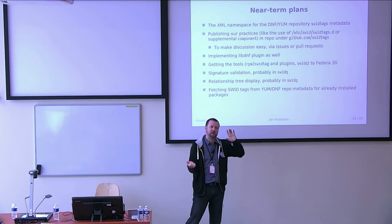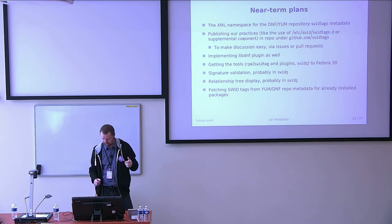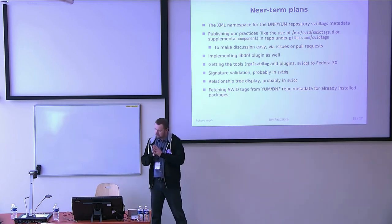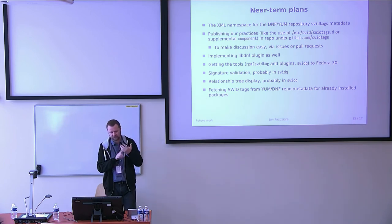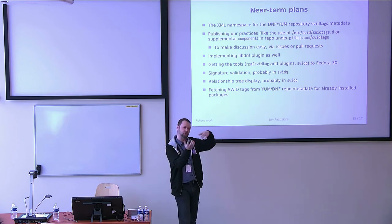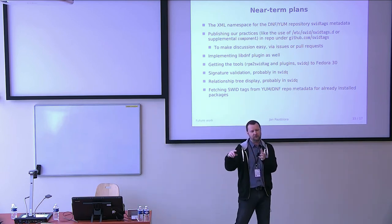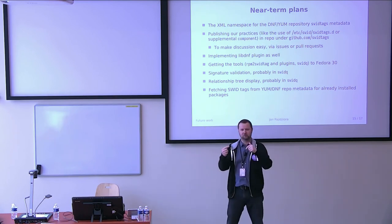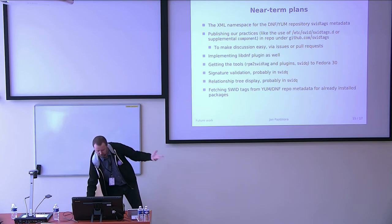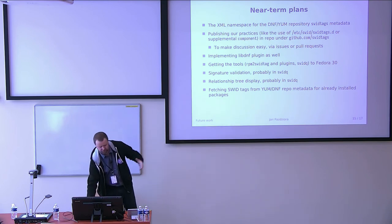We have a DNF plugin, and I need to write a libdnf plugin because apparently you need to implement things twice in the DNF world. I'd like to get the tools you just saw into Fedora 30. And I probably need to add signature validation and a way to show not just the tree of supplemental tags but also other relationships like components. The problem is that to show components of Fedora, I first need to resolve the supplemental tags to find the final information about what those components actually are — so it's a multi-stage process. I also want to make it possible to update SWIDTAGs from the DNF repository if you already have packages installed, not just during installation.